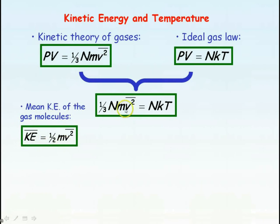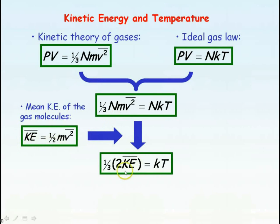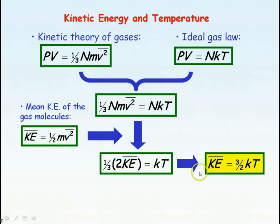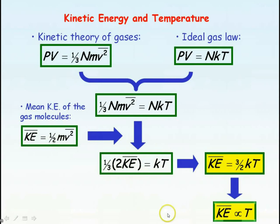We now substitute for mV squared into this equation. We can see that mV squared equals 2 times the mean KE. Substituting that in, the N's cancel out. Rearranging to make the mean KE the subject, we get that it equals 3kT divided by 2. So this equation shows that the mean KE of the gas molecules is directly proportional to the absolute temperature.